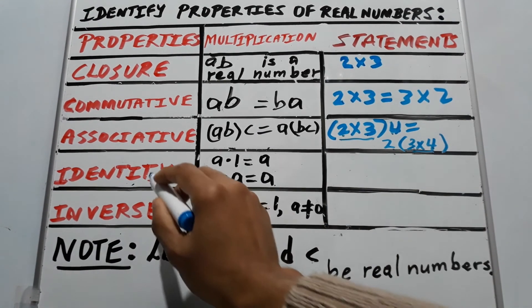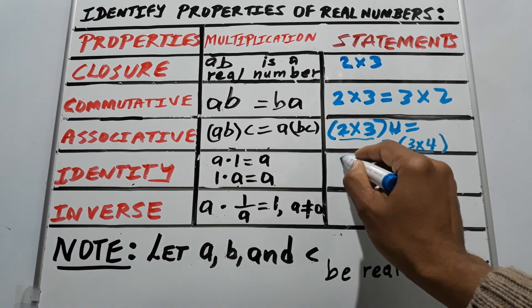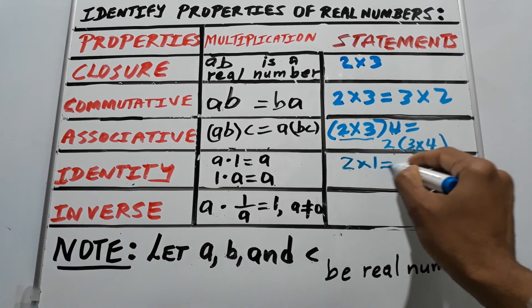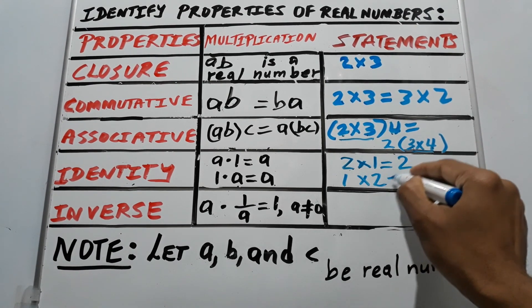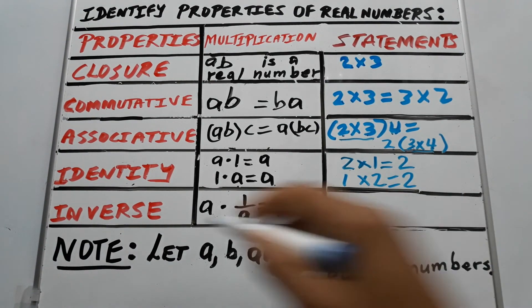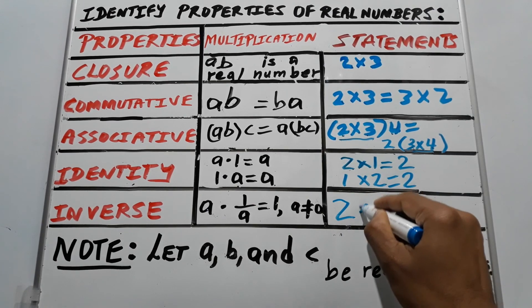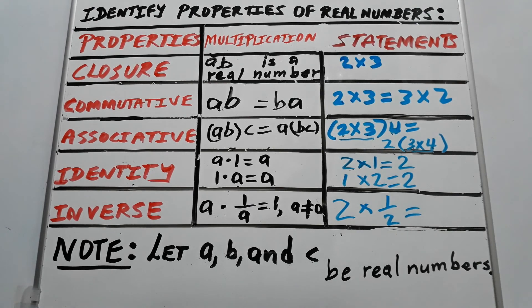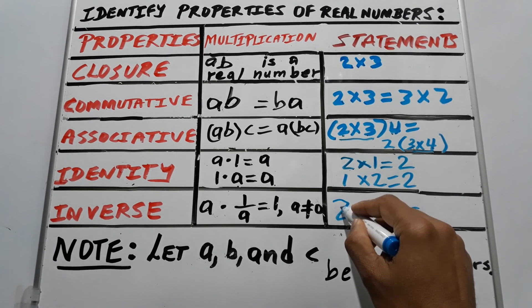Identity: let's say two times one equals two, one times two equals two, the same. Identity. Inverse: say two, two times one over two equals one. Two is the same as two over one.